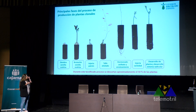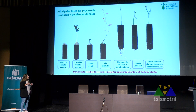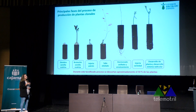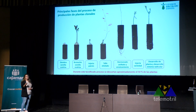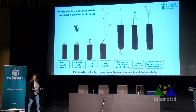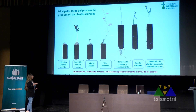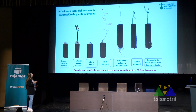Se desdobla la bolsa y se llena con sustrato, no sin antes colocar una anilla que, conforme el árbol vaya creciendo, va a estrangular el tallo y va a hacer que la semilla se elimine. La semilla la utilizamos como motor de energía para que crezca la planta, pero luego la anilla la va a eliminar.